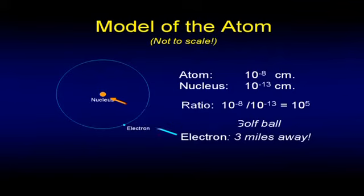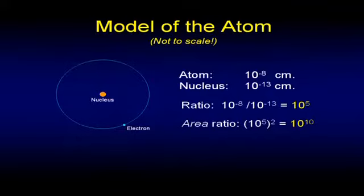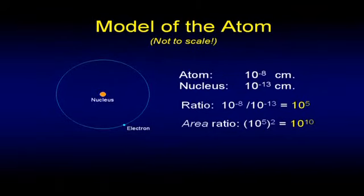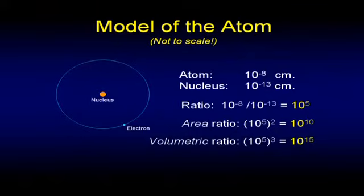That doesn't talk about the area that it encompasses. To get area you square it: 10 to the fifth times 10 to the fifth equals 10 to the tenth. But the molecule isn't planar — it's three-dimensional. So the volumetric ratio is 10 to the fifth cubed, or 10 to the 15th. What that means is: if I have a model of an atom, the ratio of the part that's solid — the nucleus — to the volume it represents as an energy field has a ratio of one part to 10 to the 15th, volumetrically.